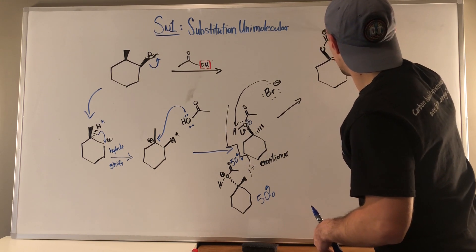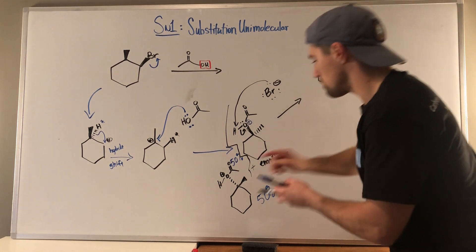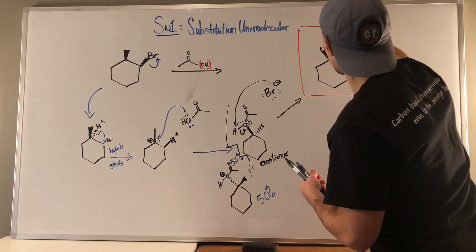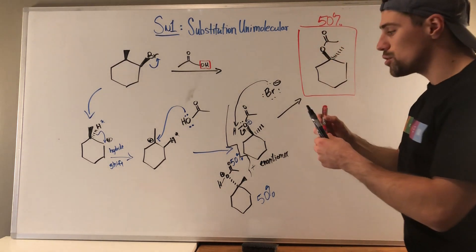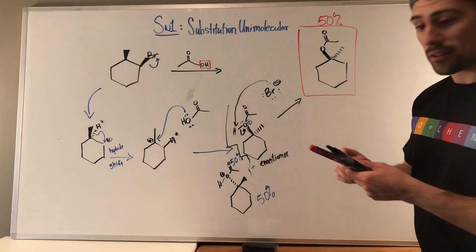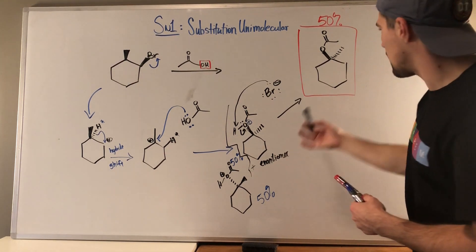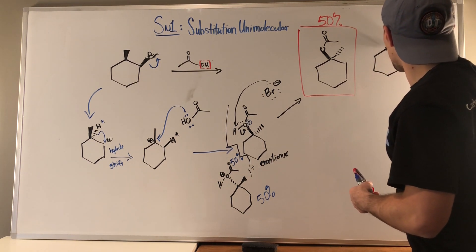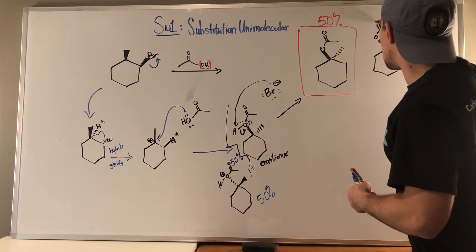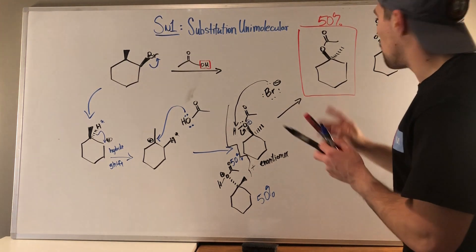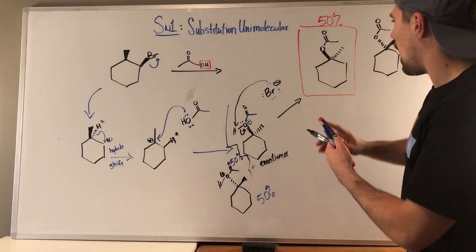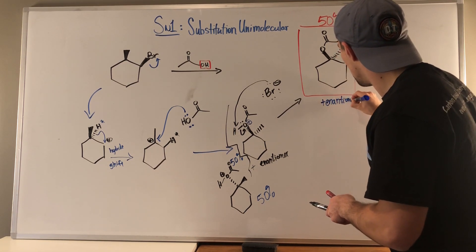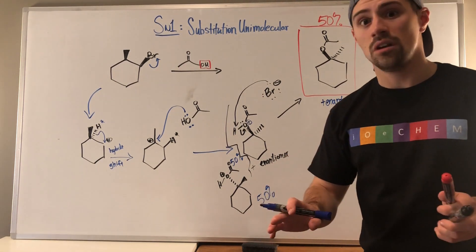So this is our final answer — but remember, this is actually just 50% of our final answer. You have the choice of drawing this and the actual second product, or you can draw one and then write plus enantiomer right underneath your answer, which is an absolutely acceptable thing to do on a test.